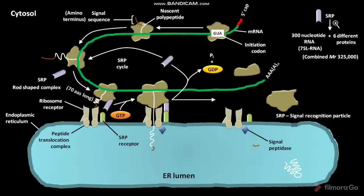After signal sequence removal, the polypeptide is released into the ER lumen. The smaller subunit and larger subunit of the ribosome then dissociate from the mRNA and are recycled.